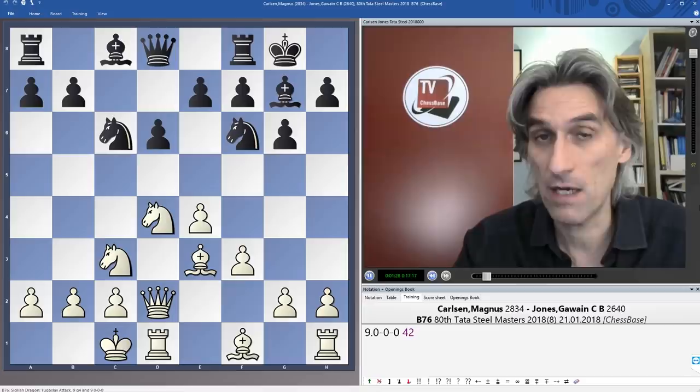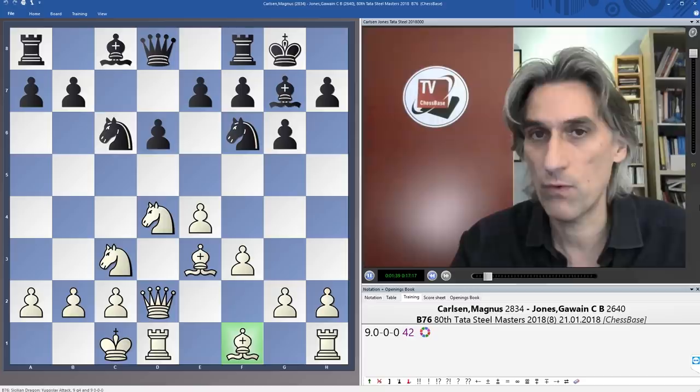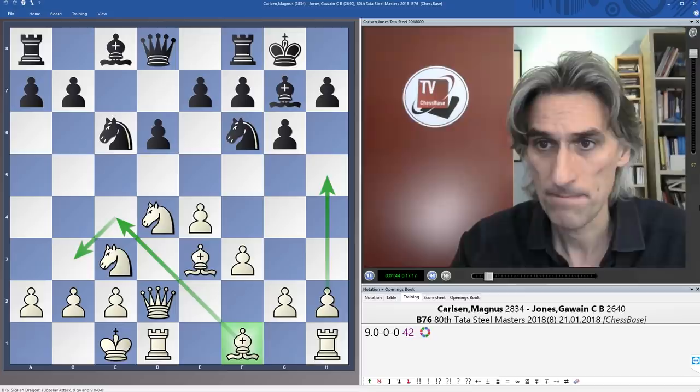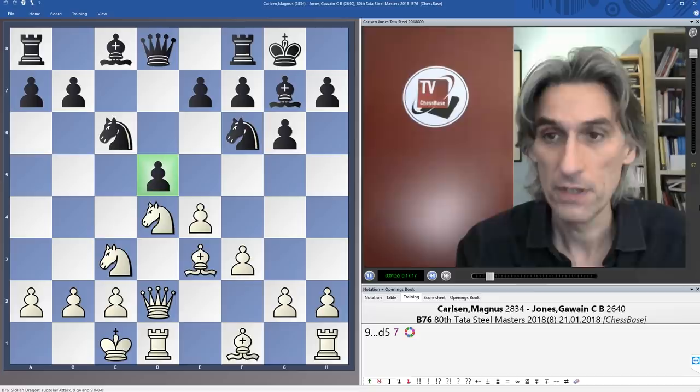So Carlsen plays one of the main lines, castling queenside, but also played bishop c4. The idea of castling queenside is to just leave the bishop on f1 and plow forward on the kingside with h4. The problem is if you don't bring out this bishop c4, then that allows black to break in the center with d5, so this is a very well-known variation.